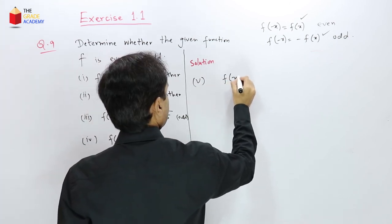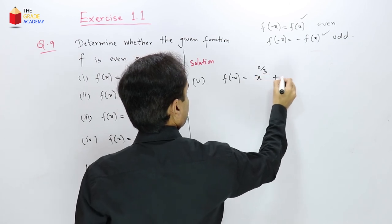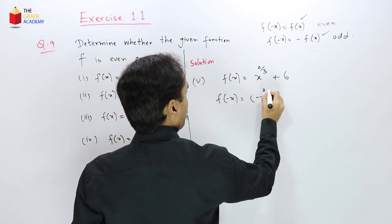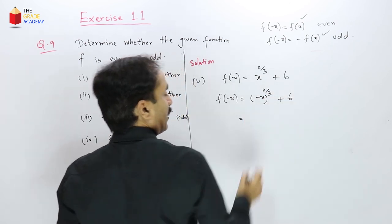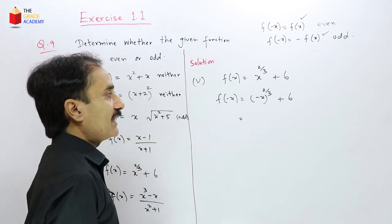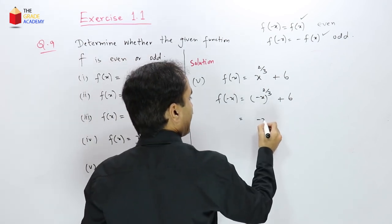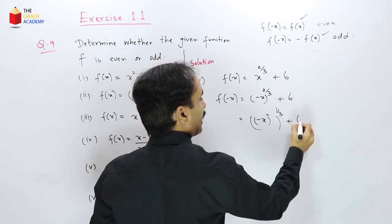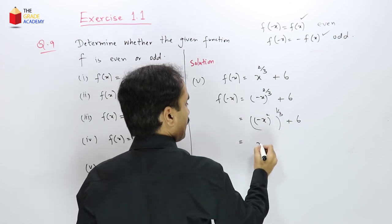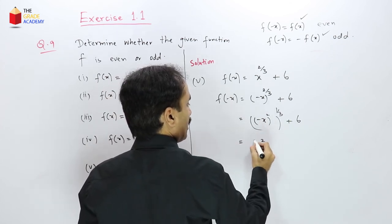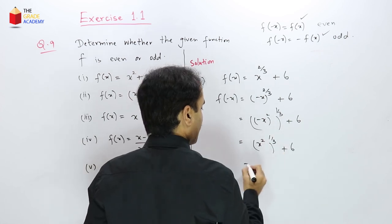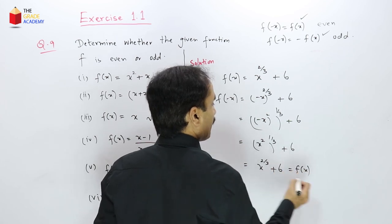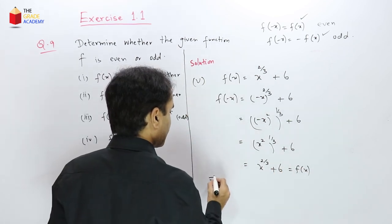For f(x) = x^(2/3) + 6: substituting −x gives (−x)^(2/3) + 6 = (x²)^(1/3) + 6 = x^(2/3) + 6 = f(x). Since squaring removes the negative sign, f(−x) = f(x). Therefore this function is even.